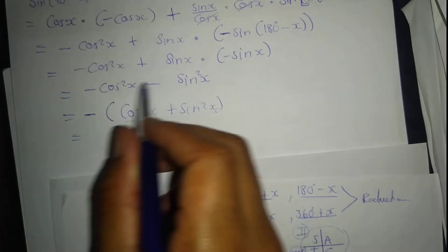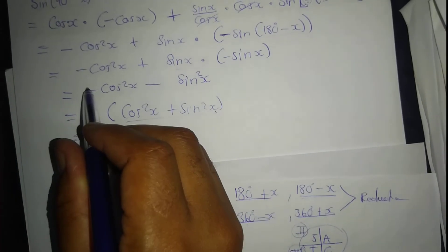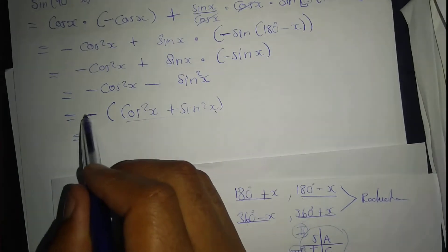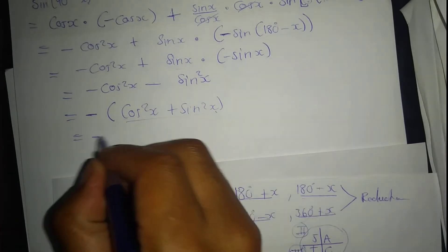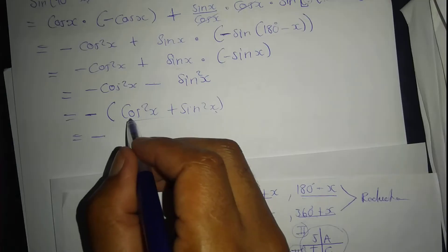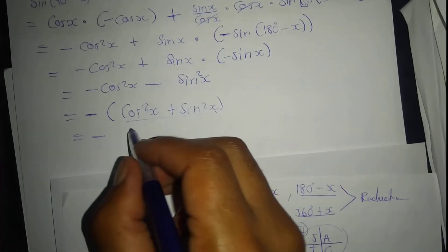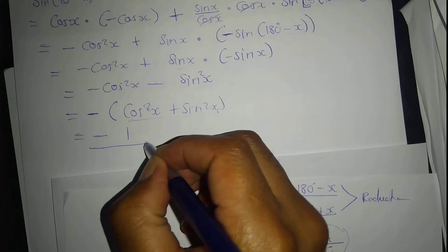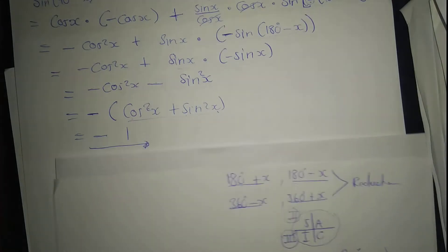To change this into the identity, keep a minus sign outside the bracket as a common factor. What remains inside is positive: cos² x plus sin² x equals 1. So the answer is negative 1.